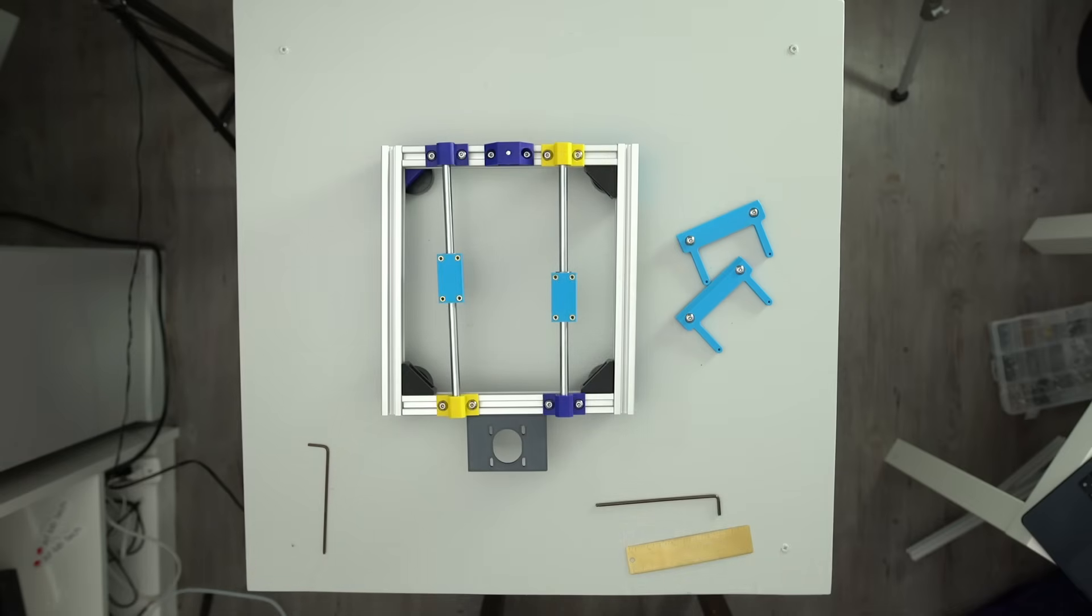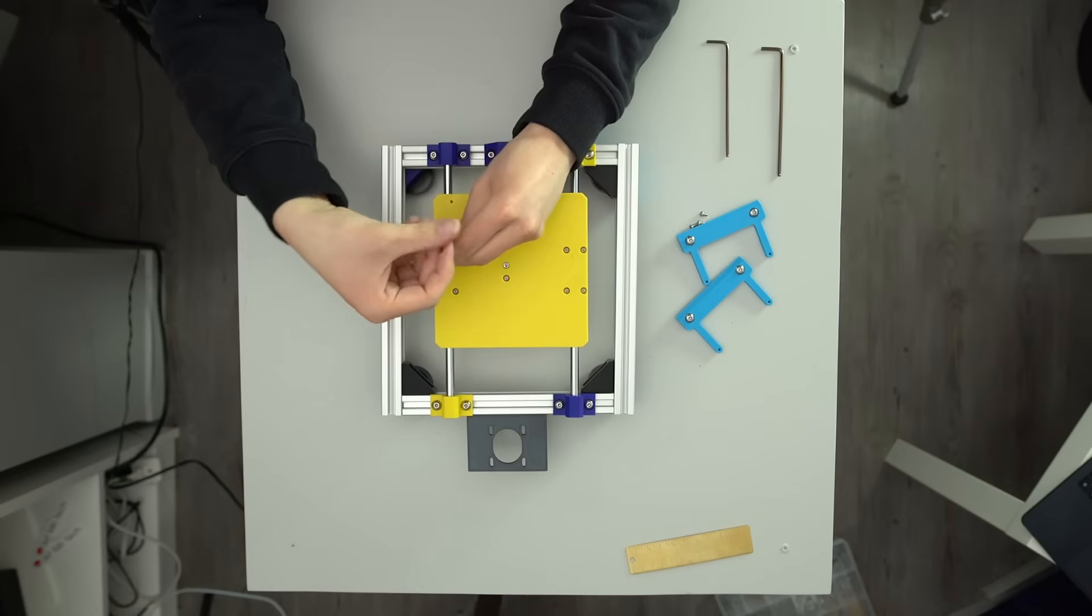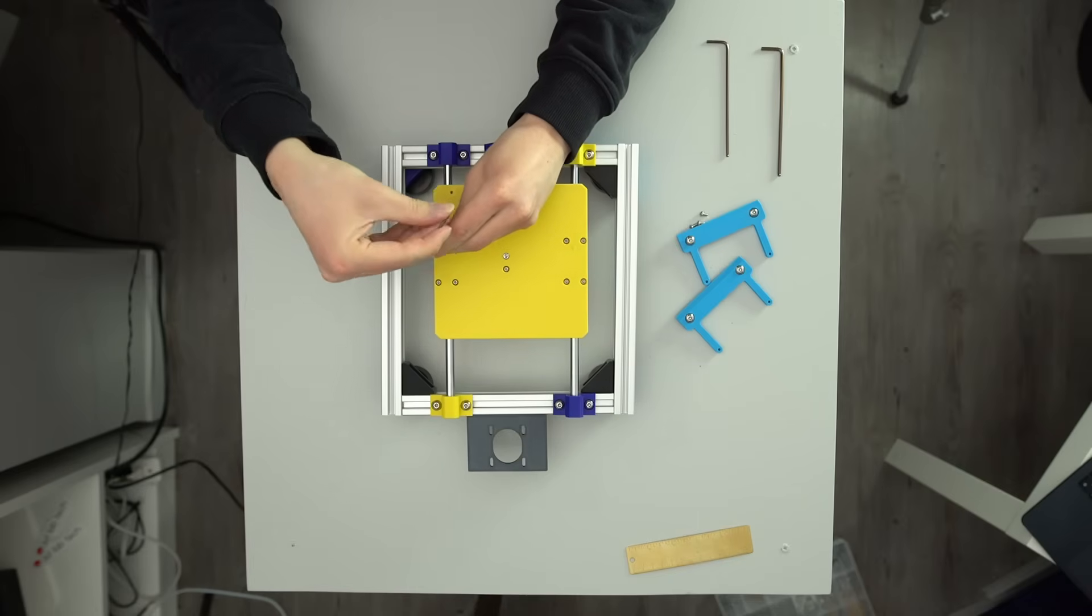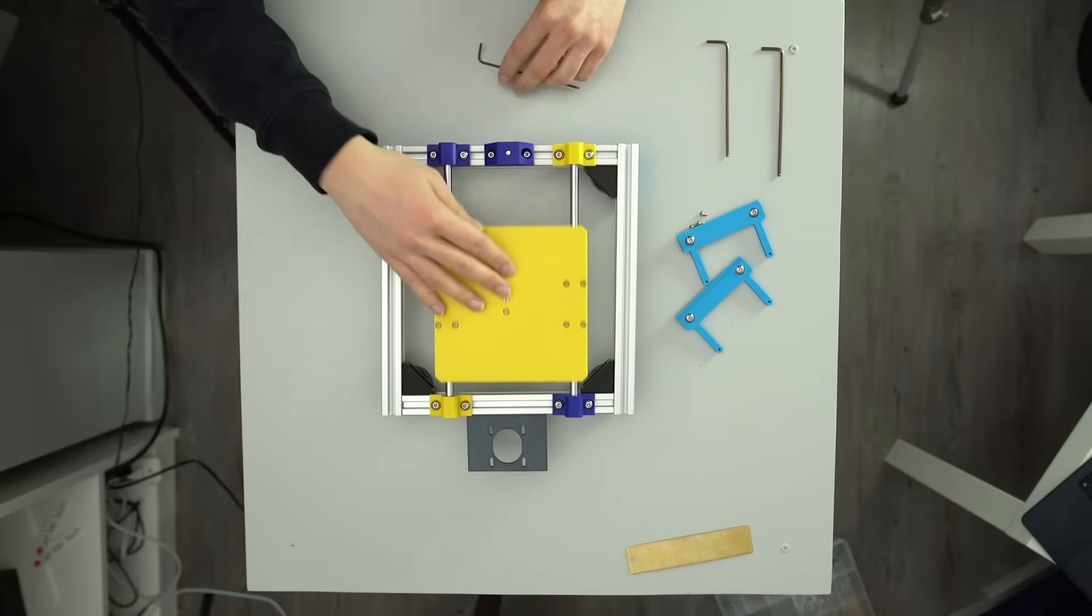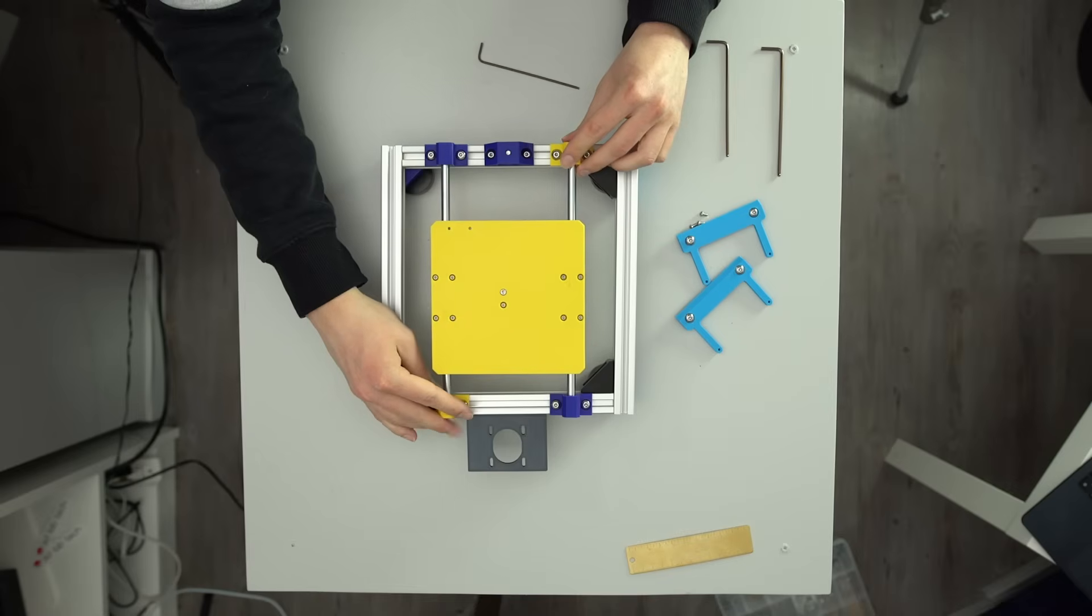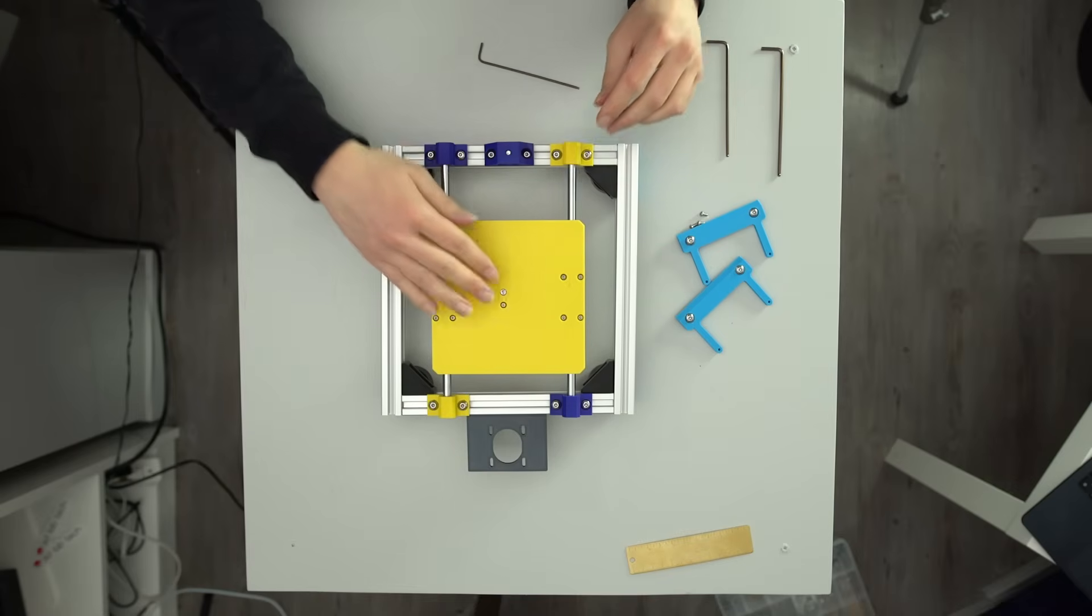The easiest way to do this is to attach the bed to the bearing mounts, slide the rods through, and then press the rod holders onto the end. If you can move the bed back and forth smoothly, then you'll know that everything is aligned properly, and you're good to tighten down the rod holders.